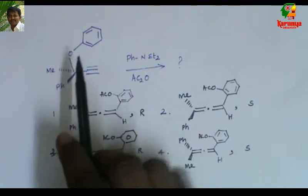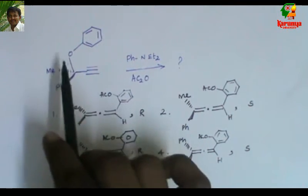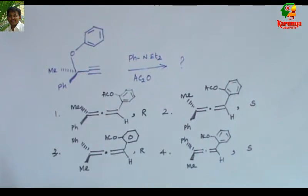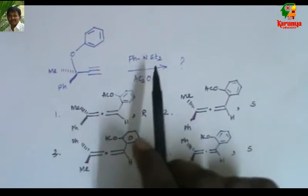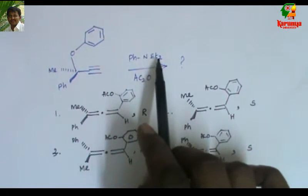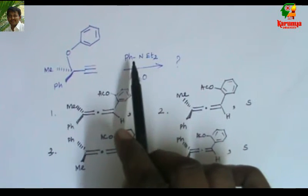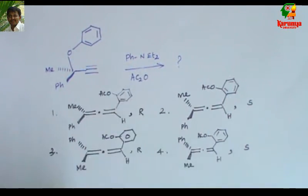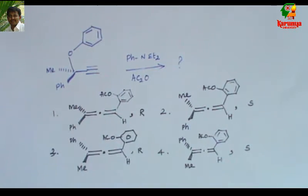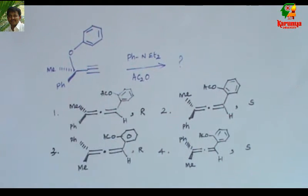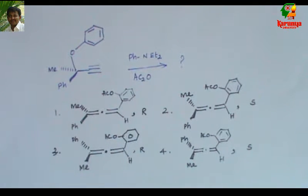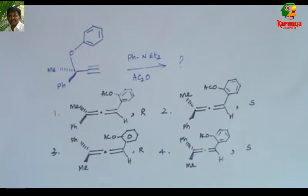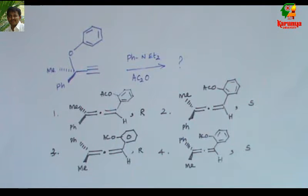When this phenyl propargyl ether is treated with diethylaniline and acetic anhydride, what is the product? And what is the stereochemistry of the products?